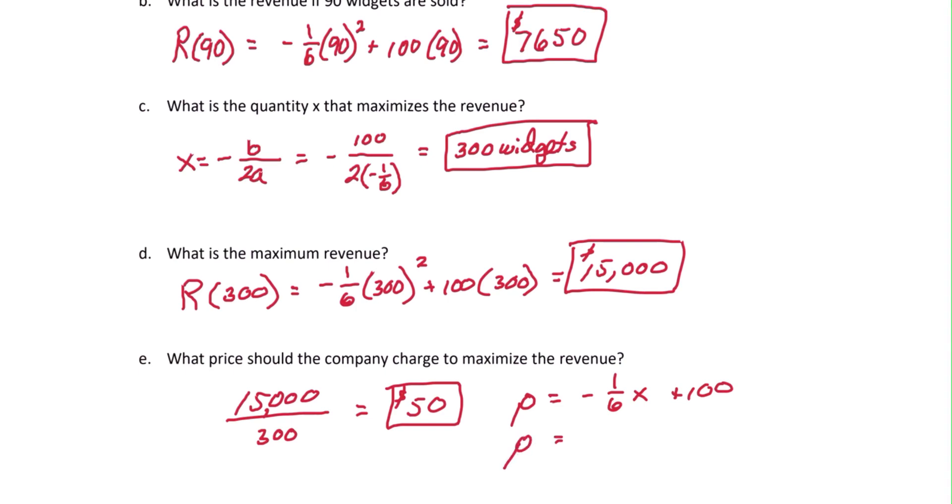So p is equal to negative one-sixth times x, the number of widgets we found to be 300, plus 100. And this gives us a price of $50.